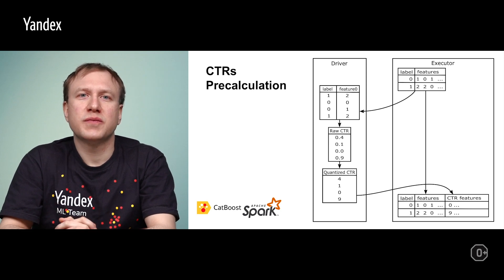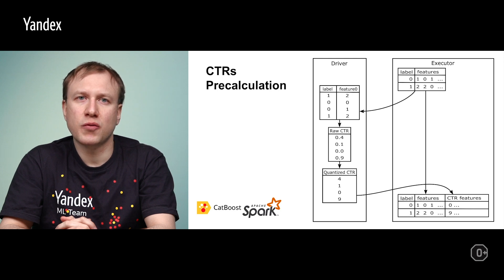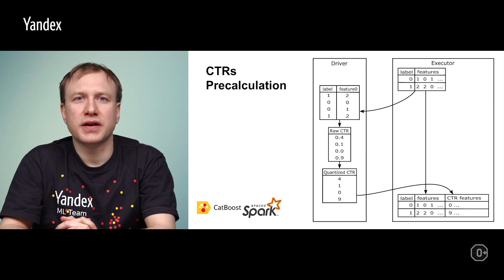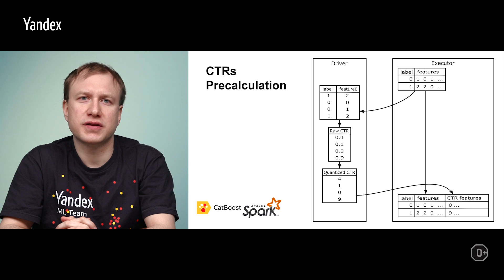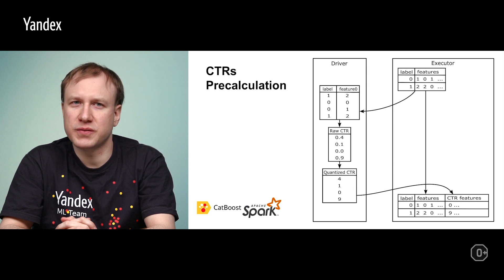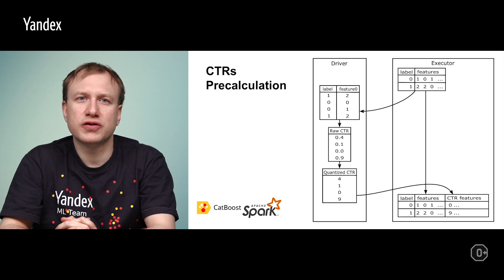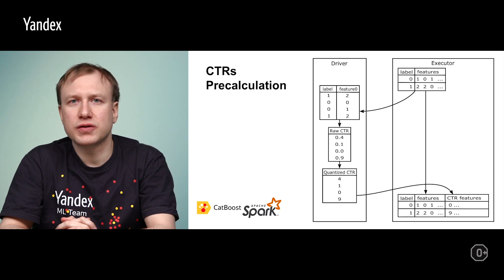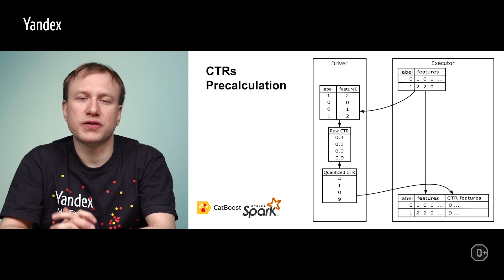Here we'll examine the CTR pre-calculation process that is performed before training. Even more work is performed here at the driver. CTRs typically require full column data for a particular categorical feature to be able to assign values for the computed CTR value sequentially — see algorithm details on the website. They also usually require target data if they are not simple counters, and we just download that to the driver as well. After a raw CTR is computed, it is also quantized and the result is saved to a new data frame.